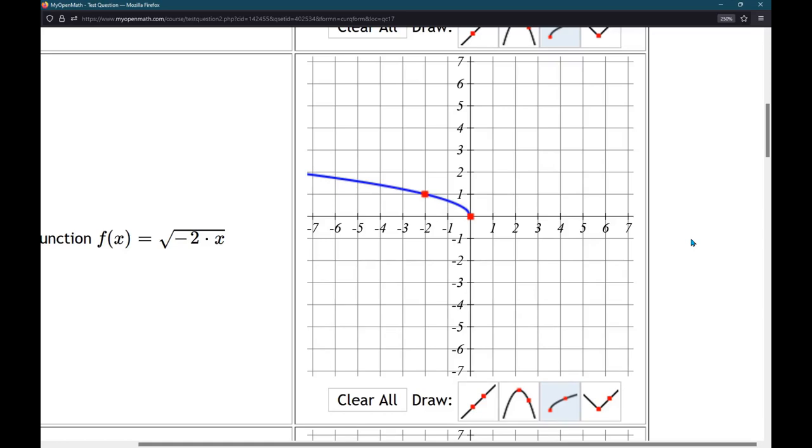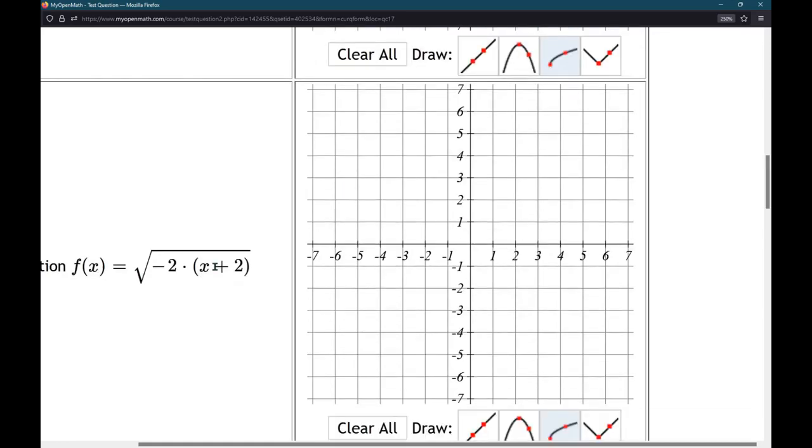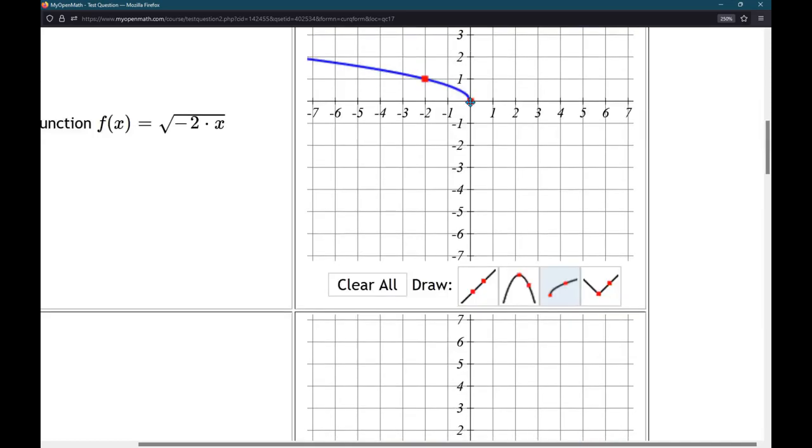Okay. Next up, this plus 2 looks like a shift right 2. Remember, horizontal is the opposite. It's a shift left 2. So, this x-coordinate of 0 is going to become negative 2. This x-coordinate of negative 2 is going to become negative 4.